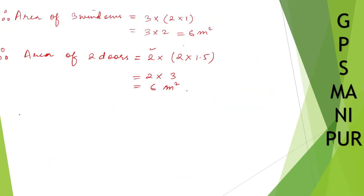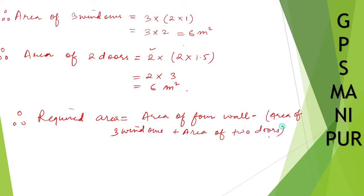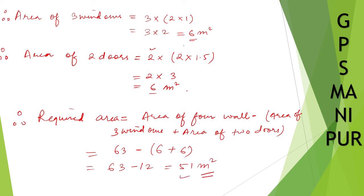Therefore, the required area = area of four walls − (area of three windows + area of two doors) = 63.0 − (6 + 6) = 63 − 12 = 51 square meters. So the required area is 51 m². That's the answer.